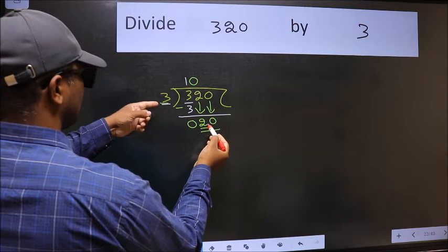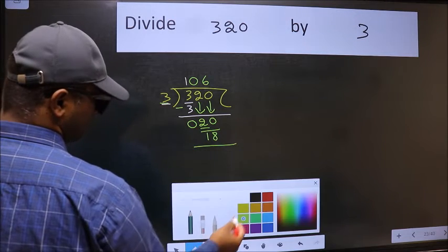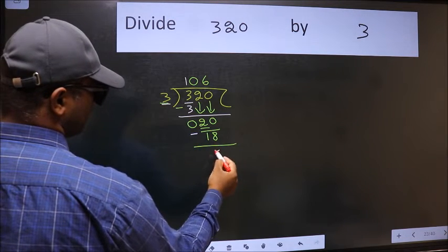A number close to 20 in 3 table is 3, 6, 18. Now, we should subtract. We get 2.